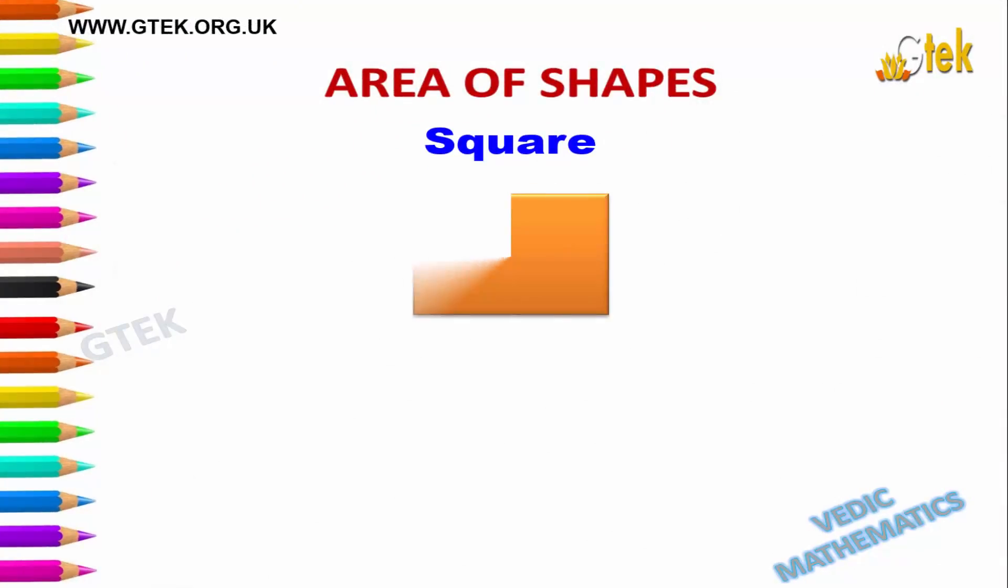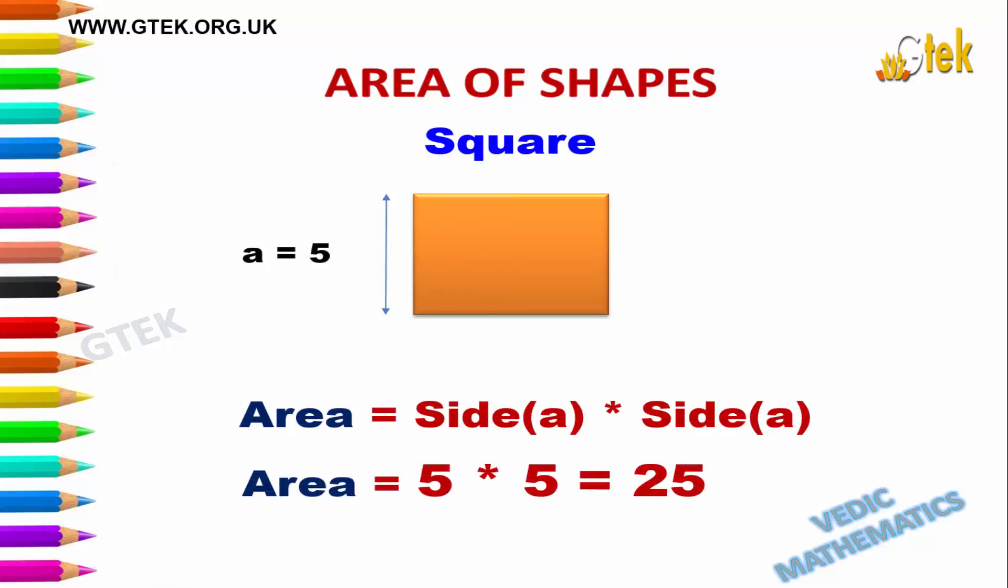First comes the square. In square we have the side value as 5. The area of square is calculated as side into side. So 5 into 5 equals 25. That's the result of this square.